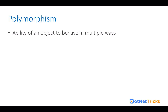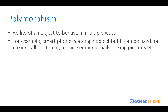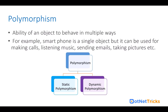Next is polymorphism. Polymorphism is the ability of an object to behave in multiple ways. For example, we have a smartphone — this is a single object, but it can be used for multiple purposes, like making calls, listening to music, sending emails, and taking pictures. This is an example of polymorphism. Polymorphism has two types: static polymorphism and dynamic polymorphism. Static polymorphism can be achieved using method overloading and operator overloading, and dynamic polymorphism can be achieved with method overriding.